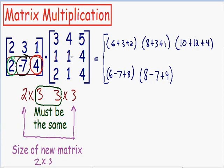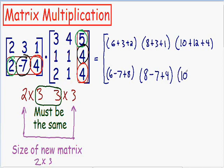And now we have to do it one last time — multiply the second row by the third column. I will put a box around the third column, and once again circle the first number in green, second in black, and third in red. Multiplying the green numbers: 2 times 5 is positive 10. The black numbers: negative 7 times positive 4 is negative 28. The red numbers: 4 times 4 is positive 16.